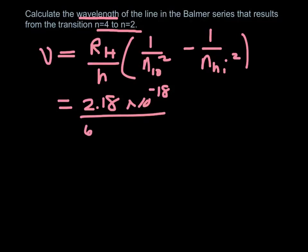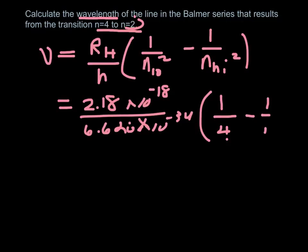So Rydberg's constant is just 2.18 times 10 to the minus 18. Planck's constant is 6.626 times 10 to the minus 34. And then 1 over the low is the 2. So 4, 2 squared, minus the higher energy level is the 4. So 1 over 4 squared, or 16. And if you do all that math out, which isn't too hard, you get 4.86 times 10 to the minus 7 meters.